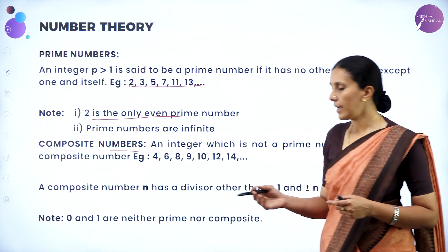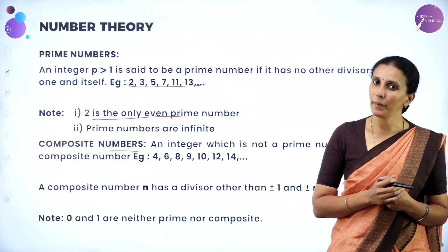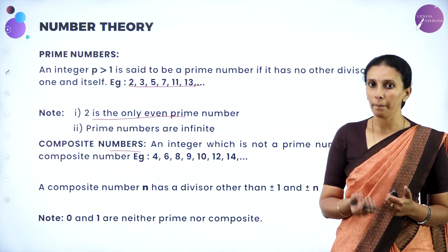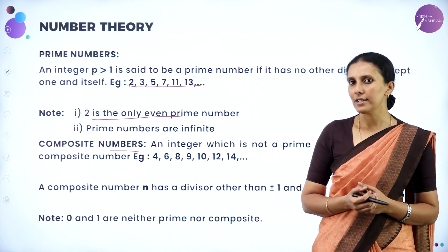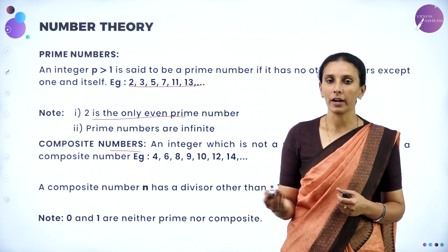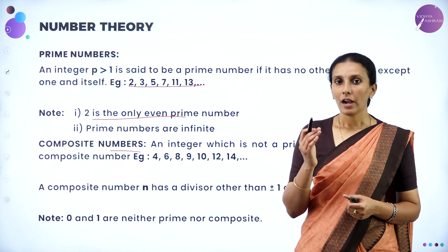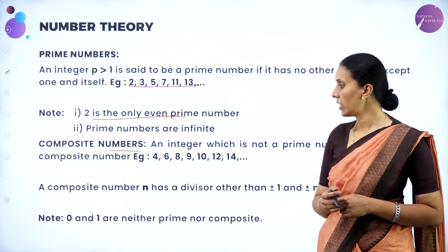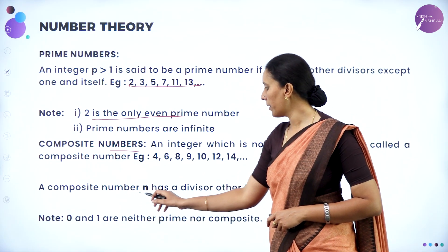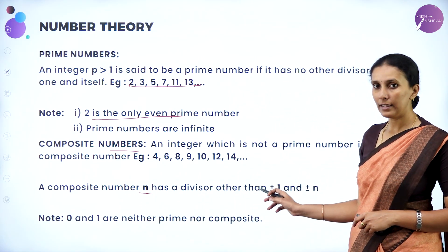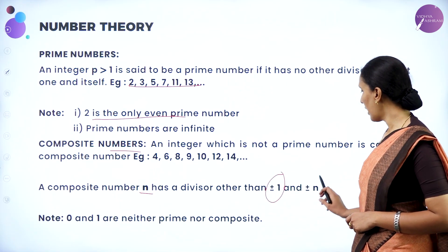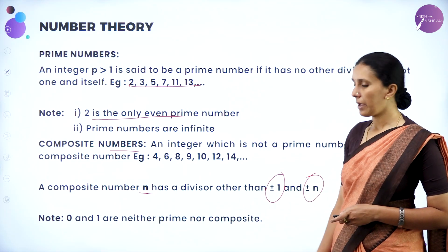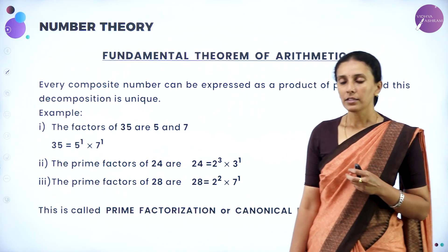Next, composite numbers. As I said, integers which have divisors other than 1 and themselves are nothing but composite numbers. Simply, the number which is not prime is called a composite number. Remember, 1 is neither prime nor composite. A composite number n has a divisor other than ±1 and ±n. Also, 0 and 1 are neither prime nor composite.